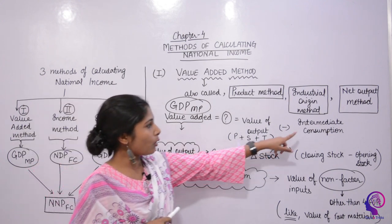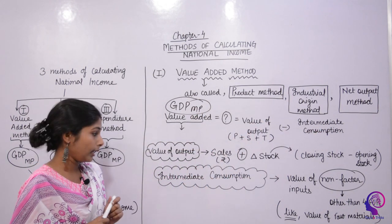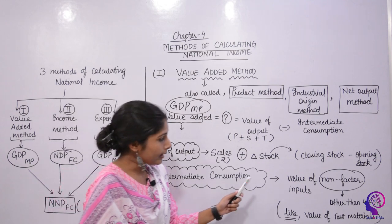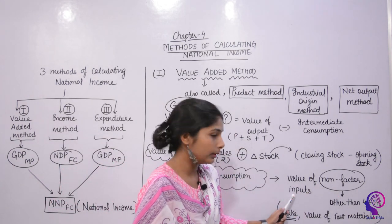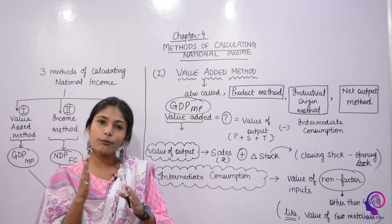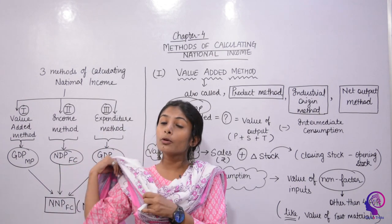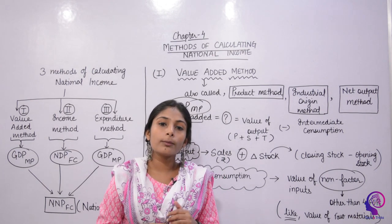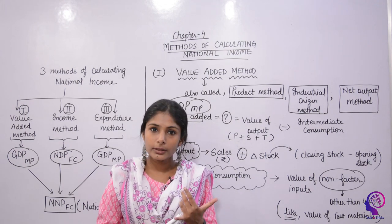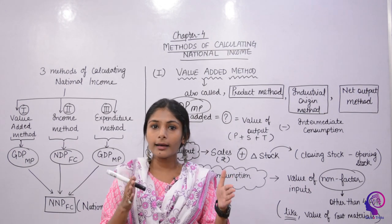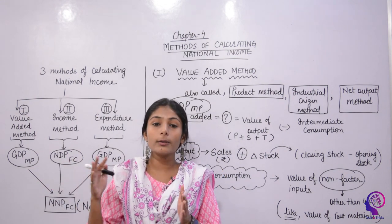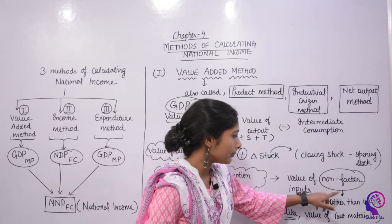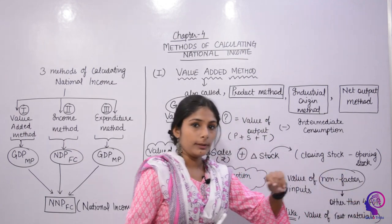The second component is Intermediate Consumption, which is the value of non-factor inputs. Non-factor inputs means inputs other than the four Factors of Production — Land, Labor, Capital, and Entrepreneurs. These four are factor inputs; everything else we call non-factor inputs.